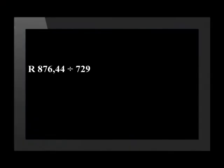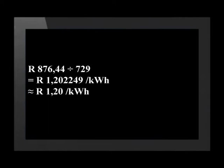Using the information we have, let's work out the cost per unit of electricity. To do this, we divide the cost of the electricity by the number of units used. R876.44 divided by 729 units equals R1.202249 per kWh. Remember, you always round off to two decimal places unless told otherwise. So the final answer is R1.20 per kWh.